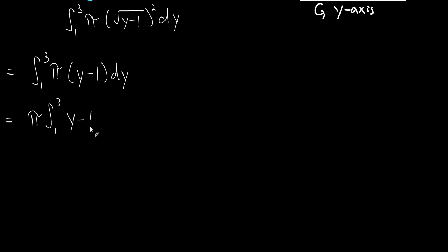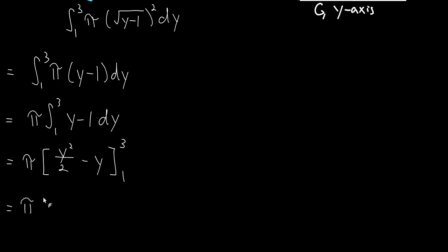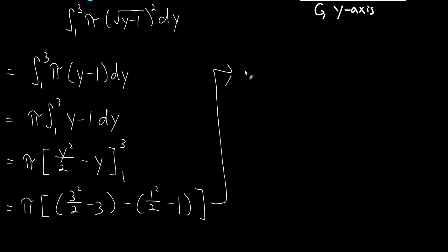Pulling pi out as a constant, we integrate (y minus 1) using the antiderivative power rule, giving pi times (y squared over 2 minus y), evaluated from 1 to 3. Plugging in 3: (9/2 minus 3). Plugging in 1: (1/2 minus 1). Combining: 9/2 minus 1/2 gives 8/2 equals 4, then minus 3 minus (minus 1) gives minus 2. So the result is pi times (4 minus 2), which equals 2pi.